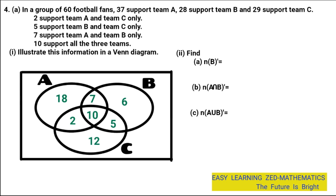If there were a statement saying a certain number of fans do not support any team, we would place that number outside the circles but inside the rectangle. Since there is no such information here, we leave the area outside the circles empty. If you have questions, ask in the comment section.